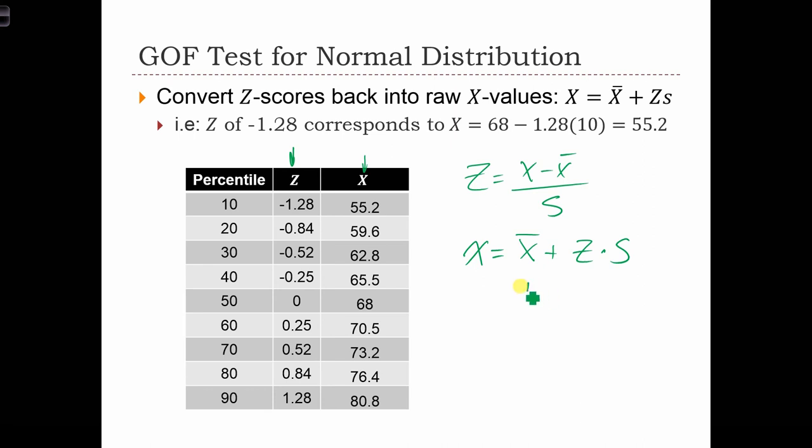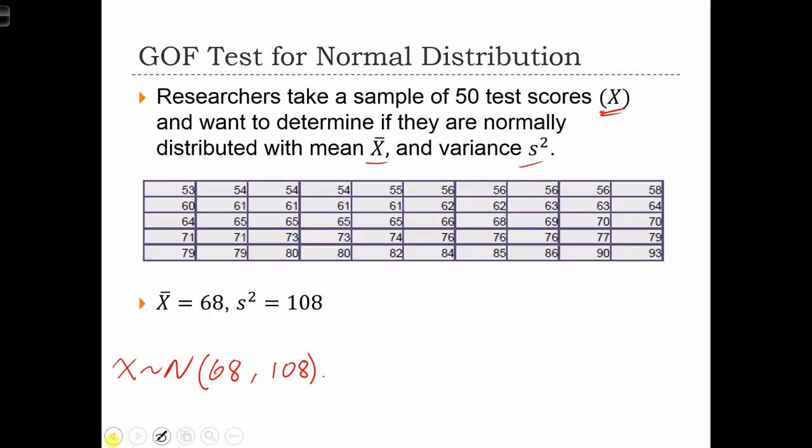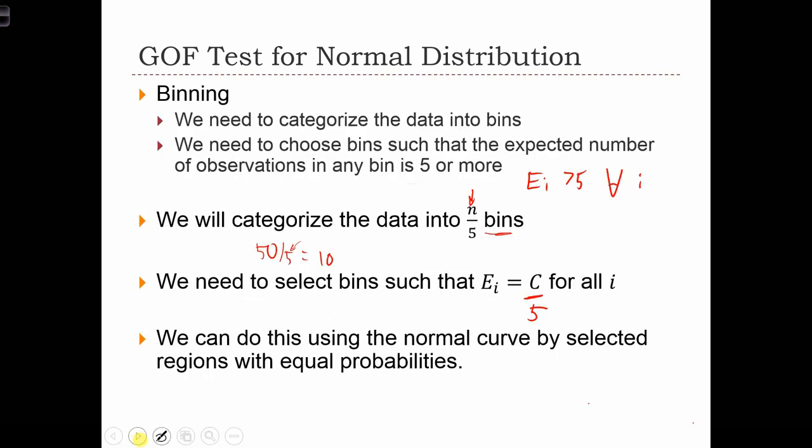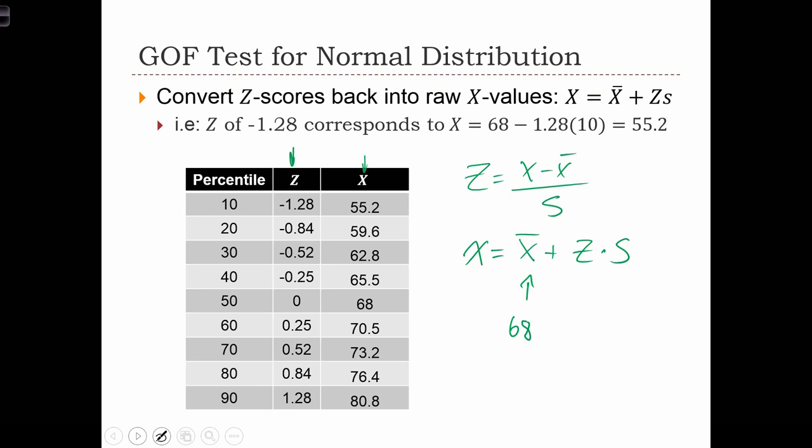And we already said from the previous page that x-bar is 68 and s-squared was 108. So we'll just take the square root of s-squared, which is a little bit more than 10, but for the sake of simplicity, we'll just leave it at 10 for now.